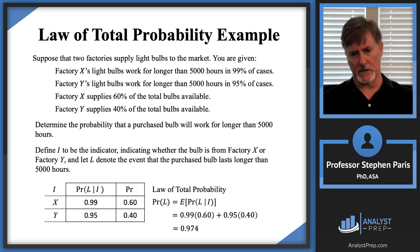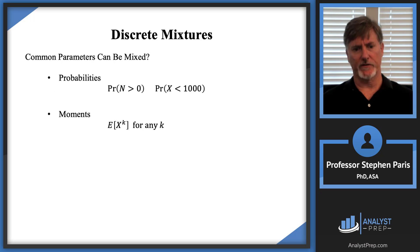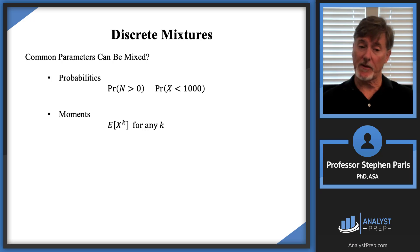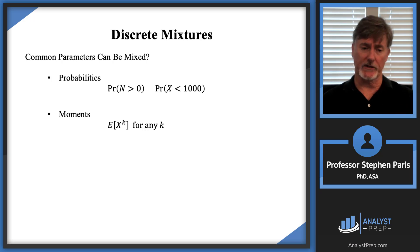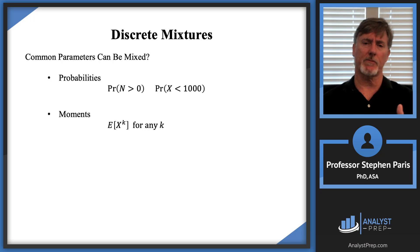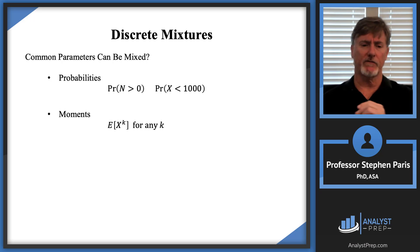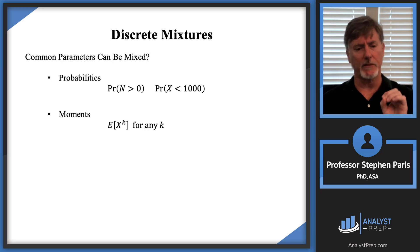Not all parameters can be mixed, so which ones can? Any probability can be mixed — P(N > 0), P(X < 1000), things like that. In a mixture problem, any probabilities can be mixed. Any moments can also be mixed.